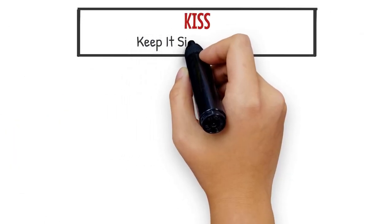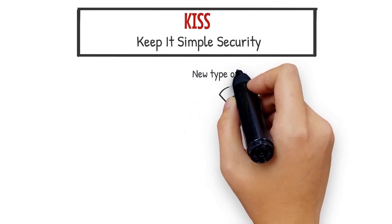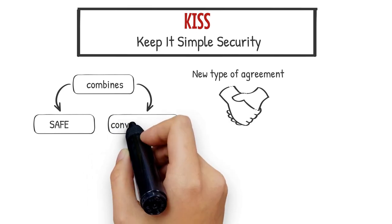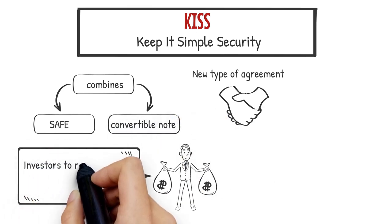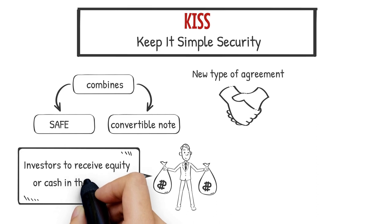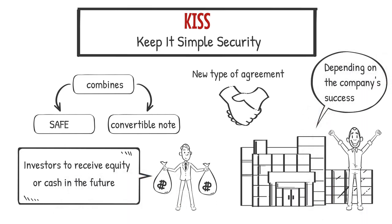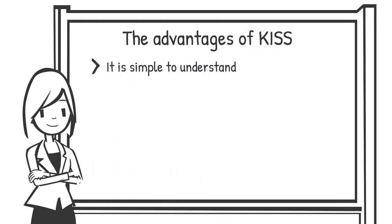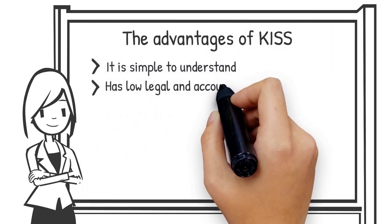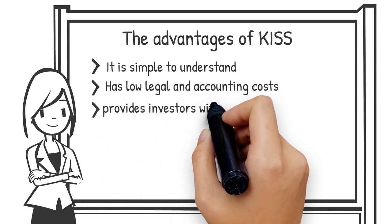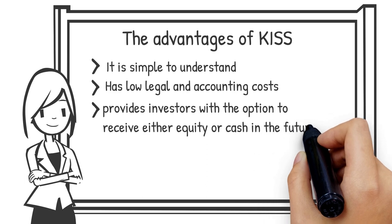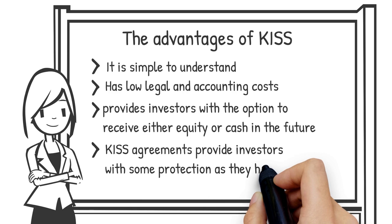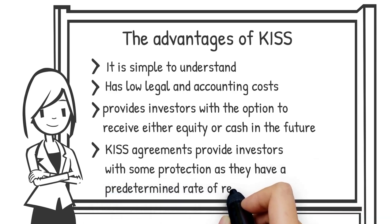KISS, or Keep It Simple Security, is a relatively new type of agreement that combines the simplicity of a SAFE with the flexibility of a convertible note. It allows investors to receive equity or cash in the future, depending on the company's success. The advantages of KISS include the fact that it is simple to understand, has low legal and accounting costs, and provides investors with the option to receive either equity or cash in the future. Additionally, KISS agreements provide investors with some protection as they have a predetermined rate of return.